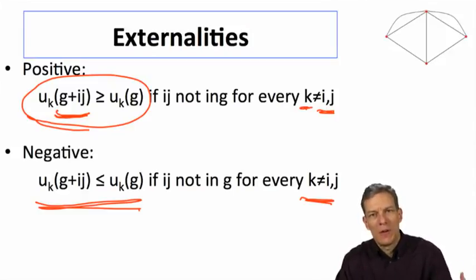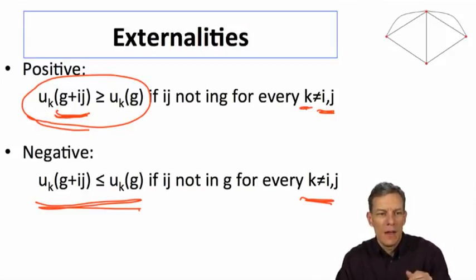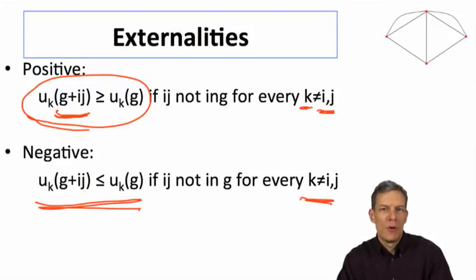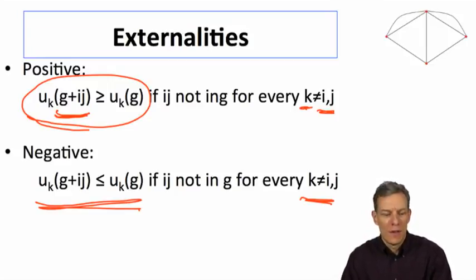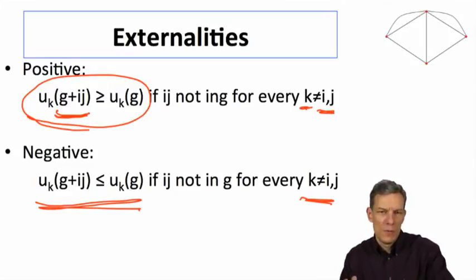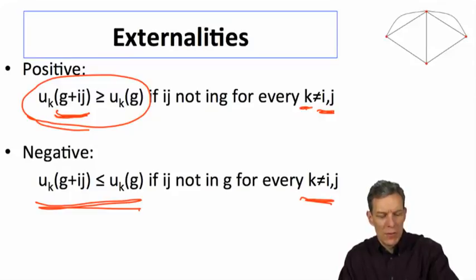Are the externalities positive or negative? Whether they're positive or negative will have different implications for which networks we might want to see and whether they're going to tend to be underconnected or overconnected — what's missing in terms of the extra values that people might not be considering.